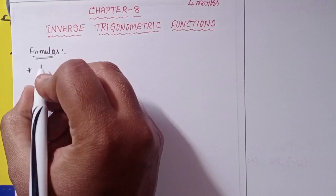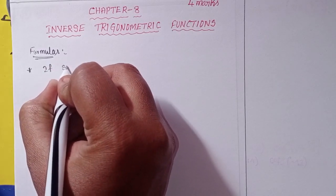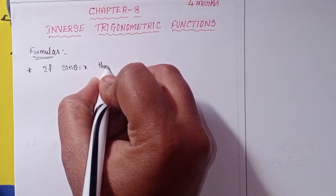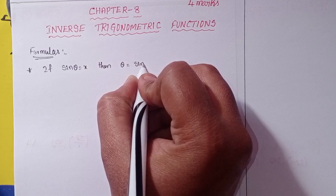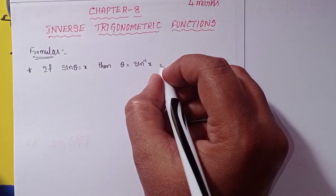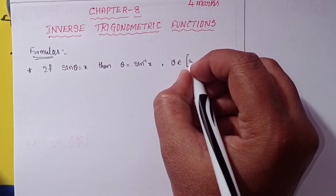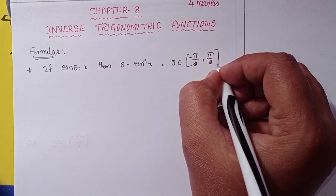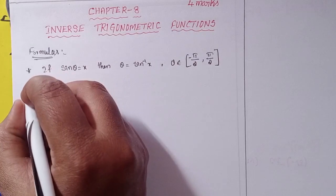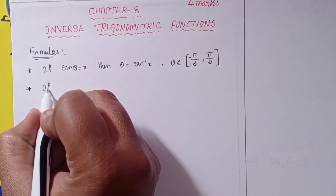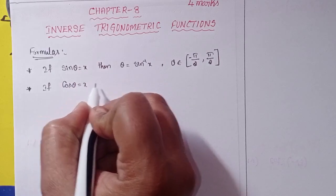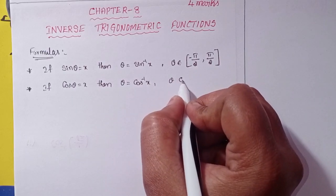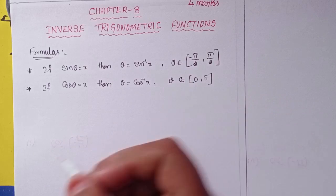First formula: If sin θ = x, then θ = sin⁻¹(x), where θ belongs to the closed interval [−π/2, π/2]. Next, if cos θ = x, then θ = cos⁻¹(x), where θ belongs to [0, π].